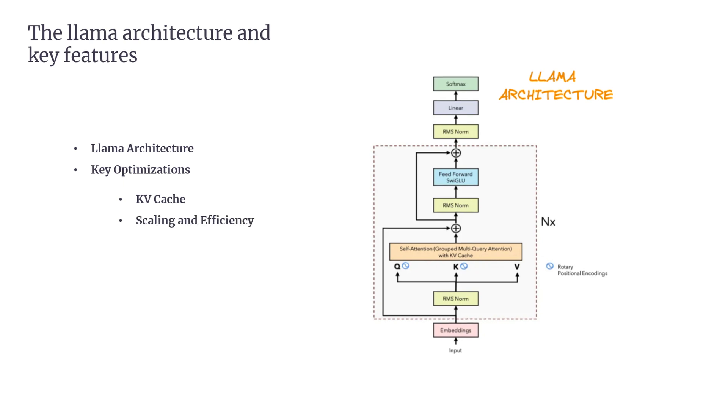Scaling and Efficiency. Compared to models like GPT-3, LLAMA is designed to be more efficient at various scales. Meta uses optimization techniques like smaller batch sizes during training to ensure that models can be trained effectively, even on less powerful hardware.